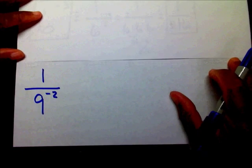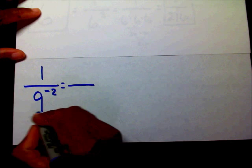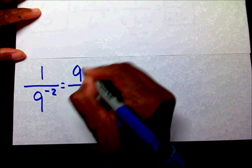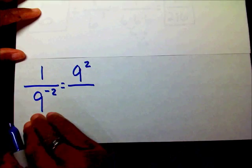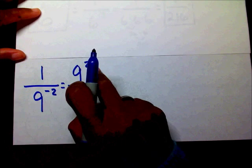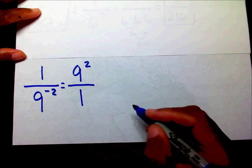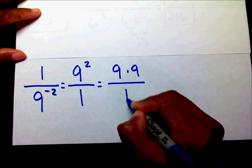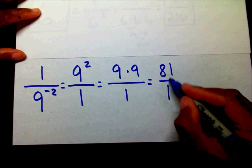Now let's look at this bottom problem. We have a negative exponent, so immediately think fraction. I have a negative 2 as my exponent, so I'm going to put this entire power in the numerator — I went from the denominator up to the numerator. When I made this move, this negative sign disappeared. So I'm going to put my 1 under it. I know that 9 to the 2nd power means 9 times 9 over 1. 9 times 9 is 81 over 1, and 81 divided by 1 is just plain old 81.